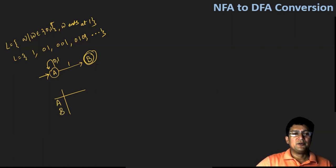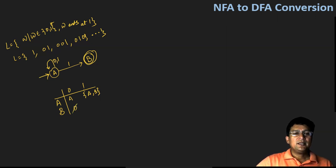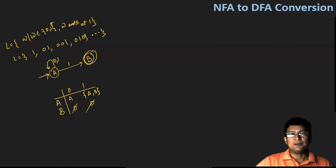So the transition table for the NFA would be: with the symbol zero from state A, I go to state number A; with symbol one, I can either go to state A or I can go to state B. So I'll mention both of these in curly braces — it means I can be in any of these two states, either A or B. With state B, the transition is not defined for zero and one, so I'll write phi here.